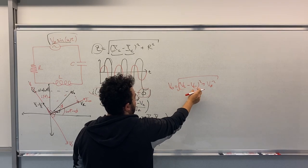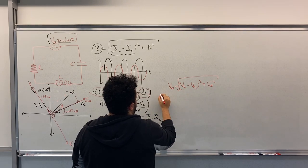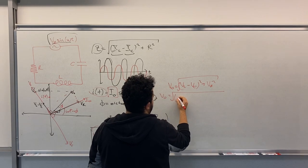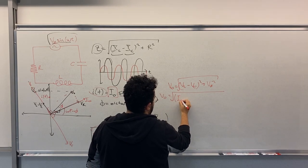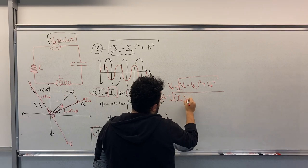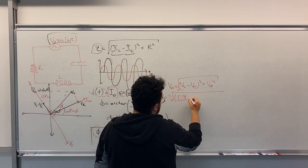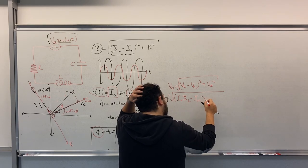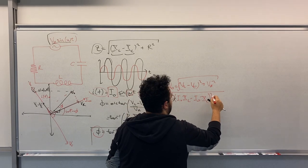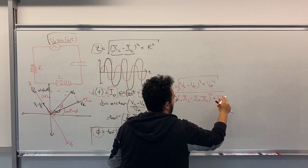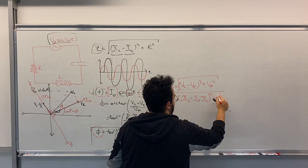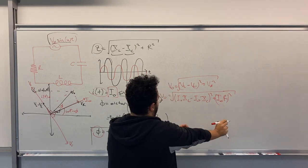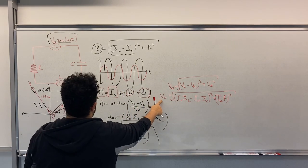You should also open all of these. V0 equals to I0 times XL minus I0 times XC squared plus I0 R squared.